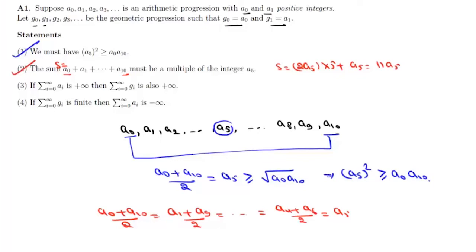Now the third one is: the sum of infinite terms of this AP, that is the summation where i varies from 0 to infinity of ai, is plus infinity. This simply means that it is an increasing AP with common difference greater than or equal to 0.